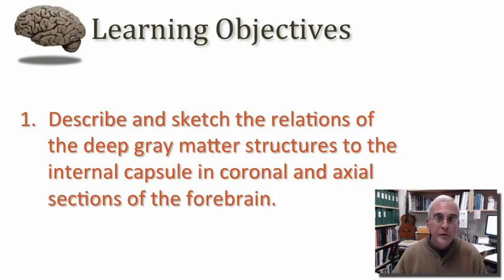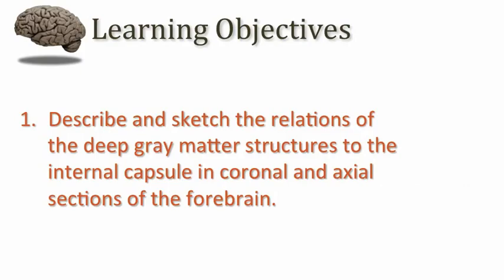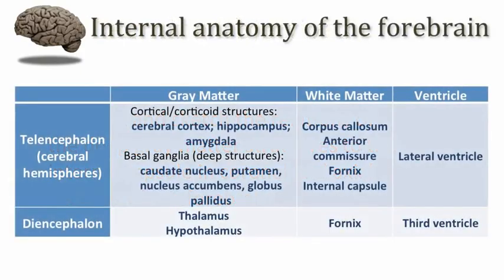What I want you to confront is the internal anatomy of the forebrain — what we find deep in the center of each hemisphere. The chart on this slide provides a summary of what I want you to apprehend. From an embryological standpoint, the cerebral hemisphere consists of the telencephalon, which is the largest component of the cerebral hemispheres.